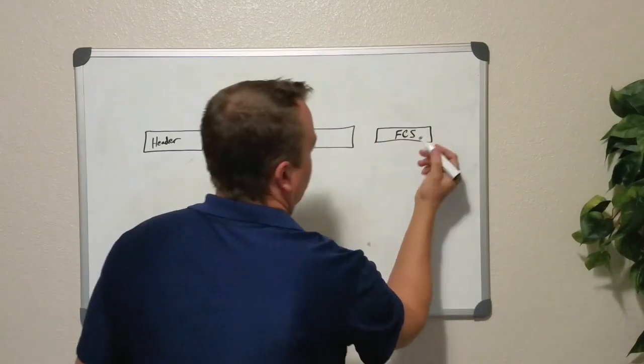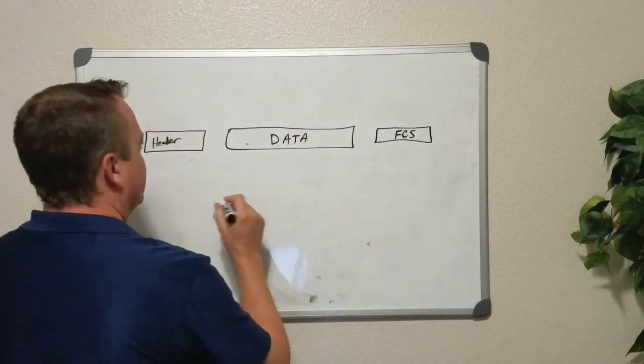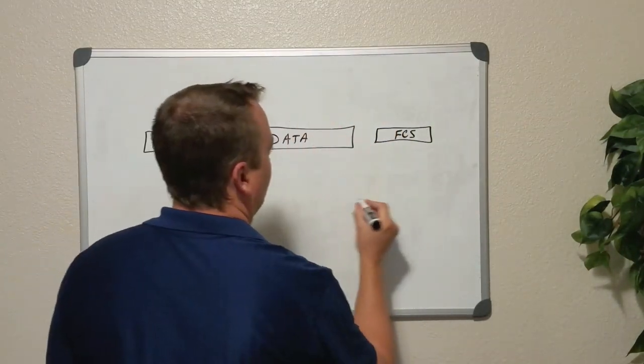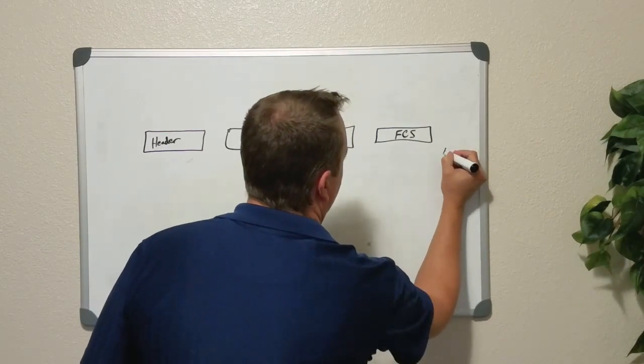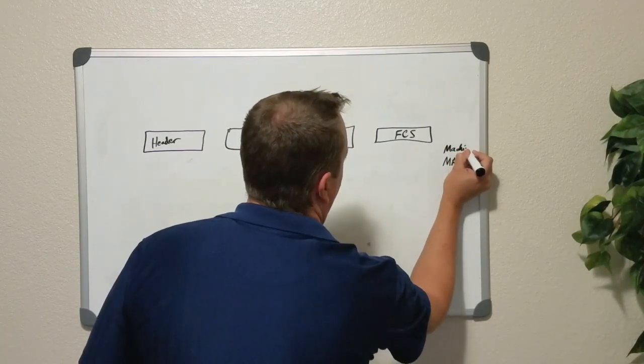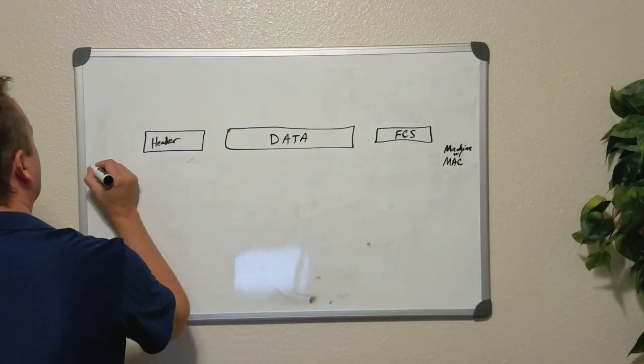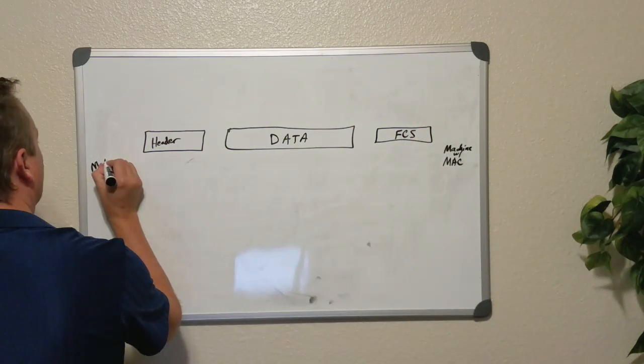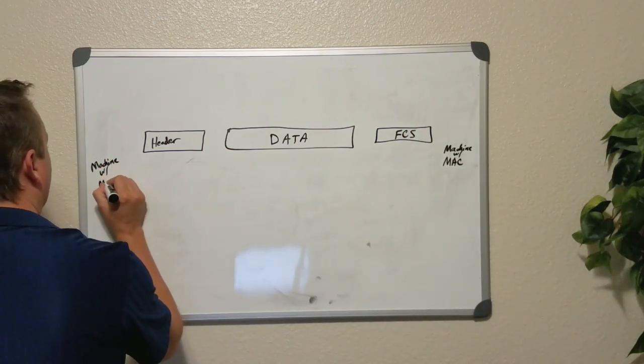A frame is followed up by a trailer, the part that follows the end of the frame. And this is so that you can get the data from one MAC address on one machine to the intended recipient machine or device with its MAC address.